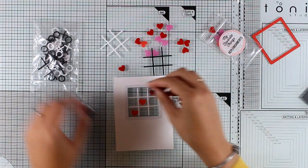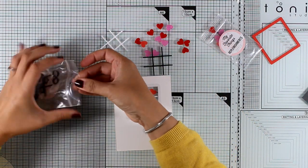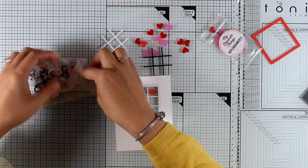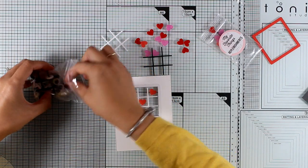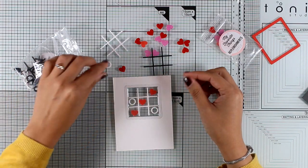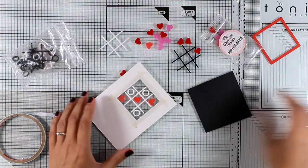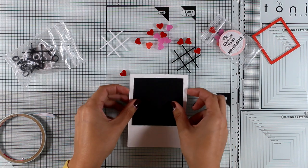So I'm going to place my little hearts inside the grid. I'm also going to place some of the O's in different places, and I'm not going to fill in the whole grid. And then I'm going to cover the back with the black piece of paper.